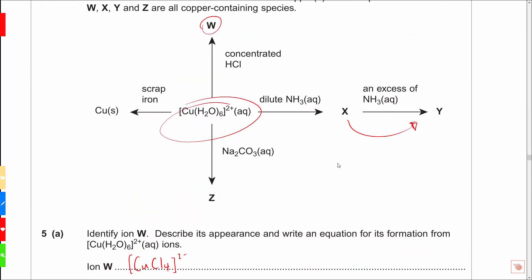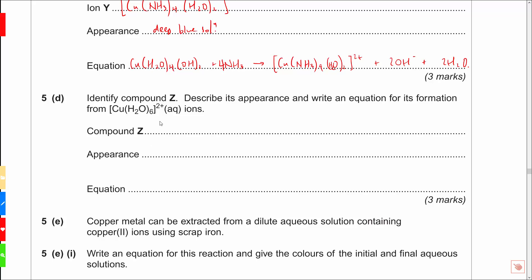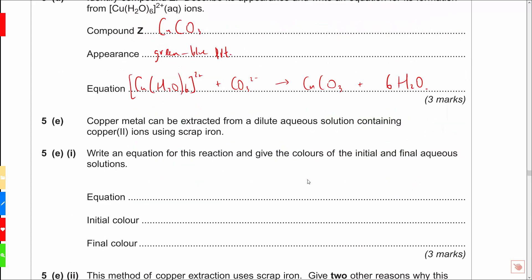The final one here in terms of our unknowns is going to be the reaction of the sodium carbonate. As I said, they've given you an actual reagent to produce Z. Compound Z is going to be the reaction of the carbonate. It's going to produce you CuCO3, which is a green blue precipitate. They also allow green solid in this particular one here. The reaction, [Cu(H2O)6]2+, CO32-. Remember that direct substitution displacement going on. We have 6H2Os there. Balances. Lovely job.